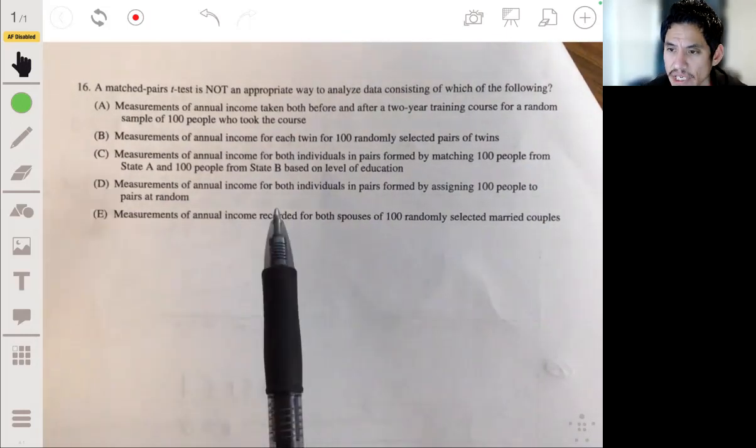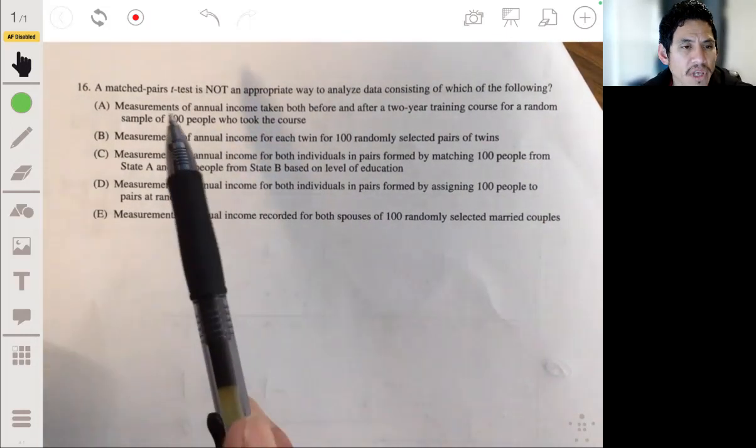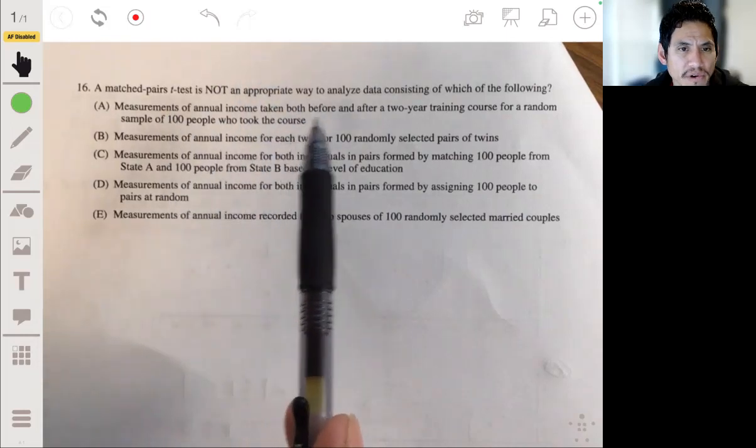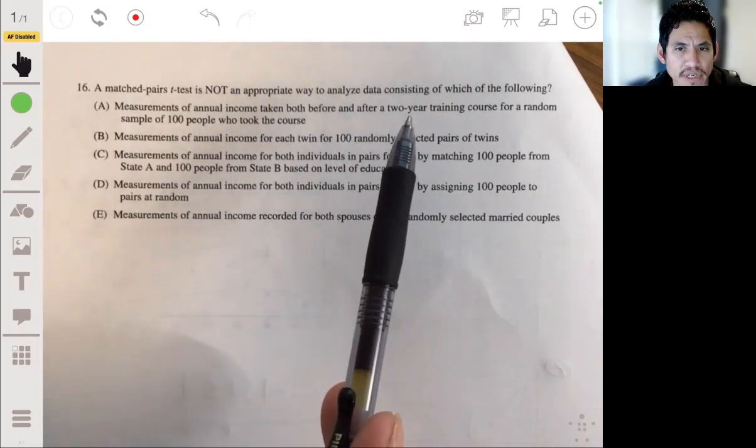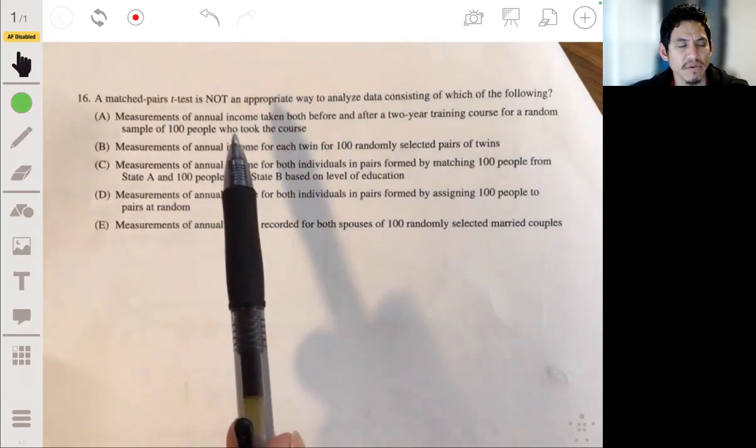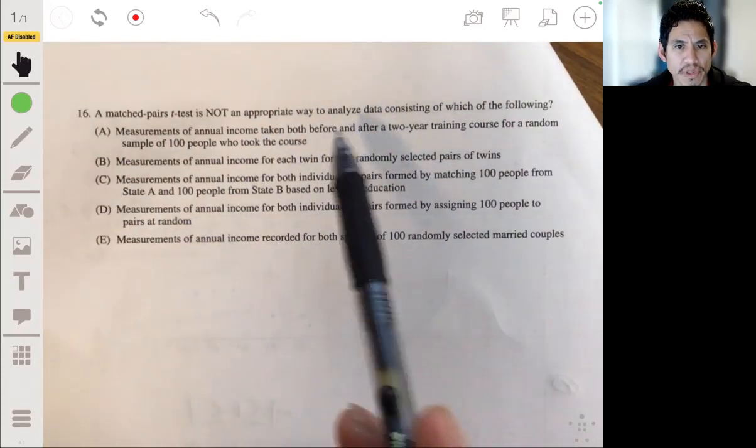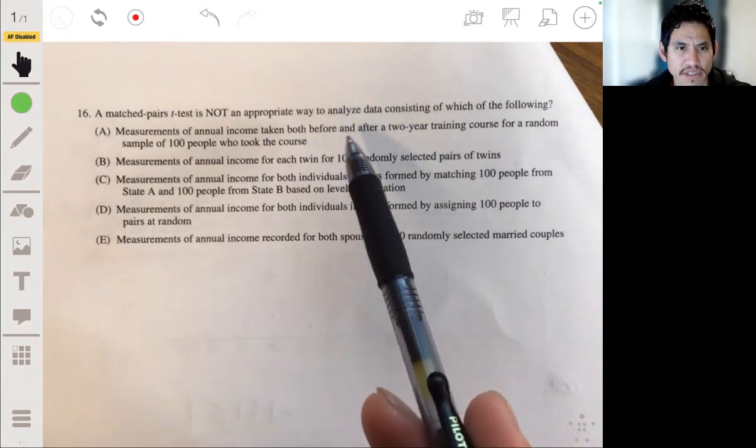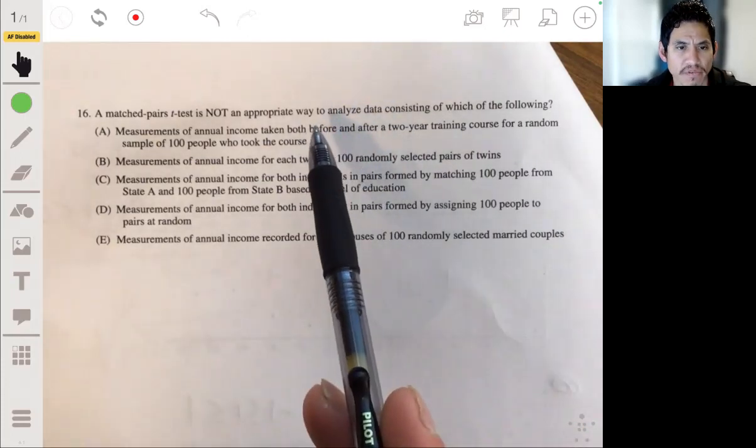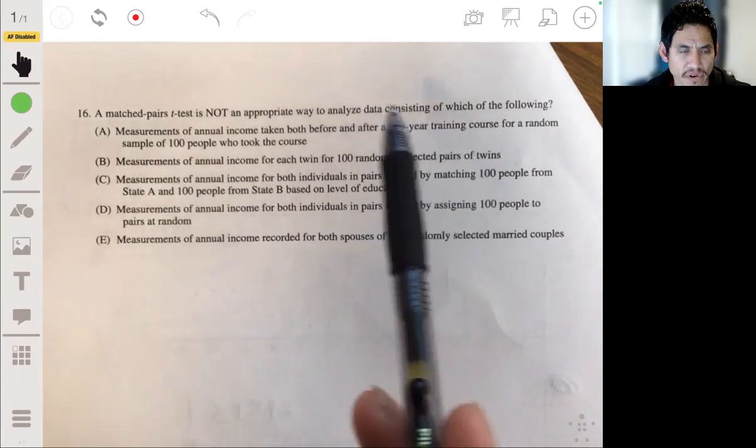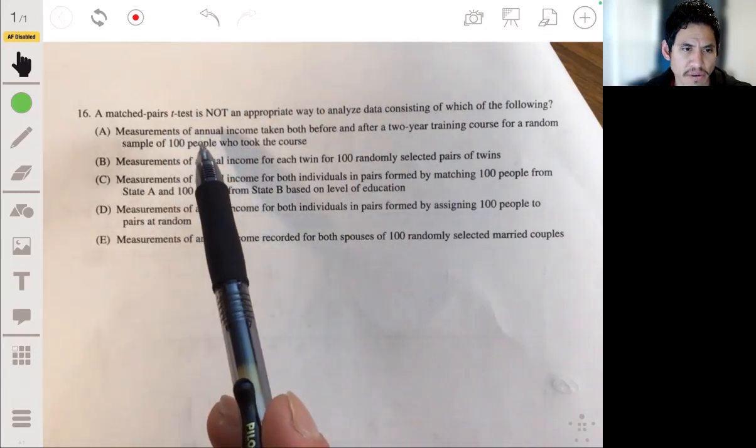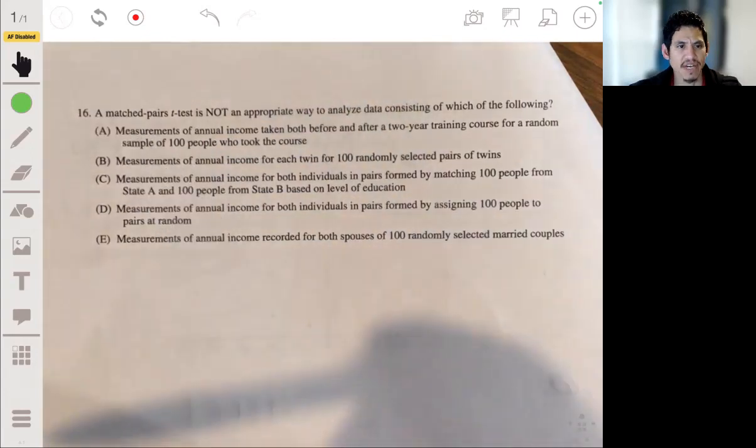Let's look to see what would not work. So we got measurements of annual income taken before and after a two-year training course for a random sample of 100 people who took the course. No, I mean this is a good one. You're taking before and after for each person. So each person's acting like their own pair and that's fine.